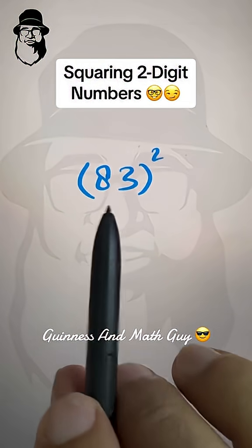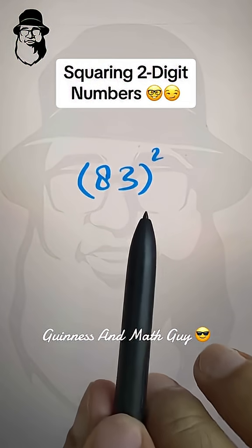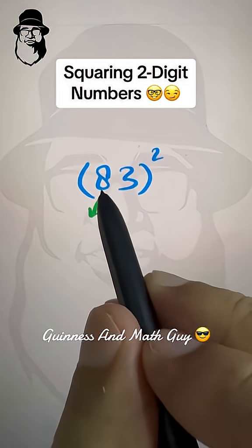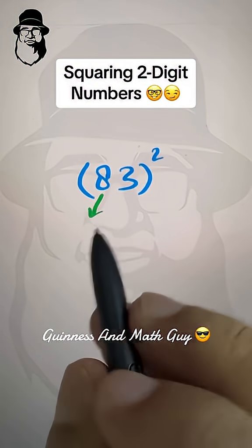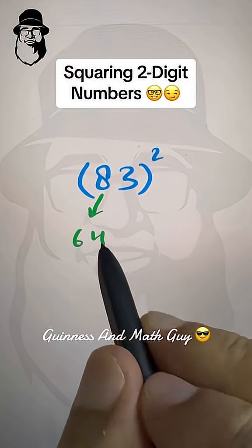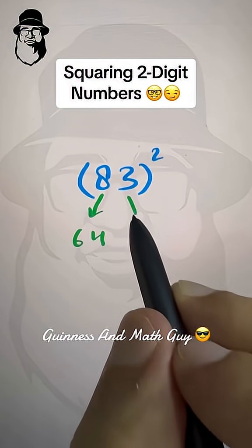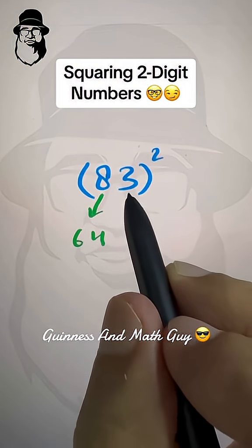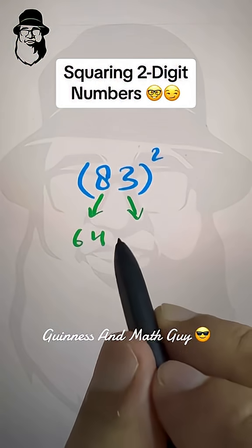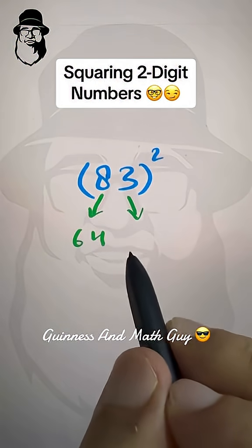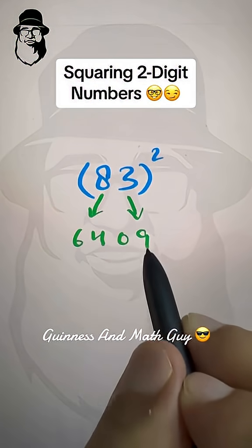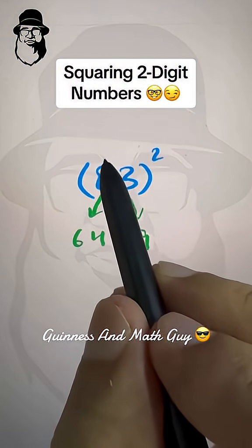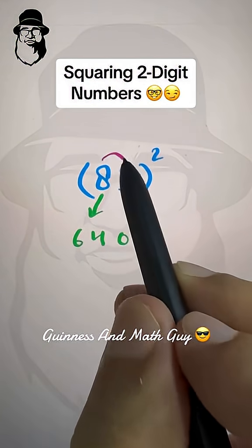With this method, you can square any two-digit number. First, square the right digit: 8 squared is 64. Then square the left digit: 3 squared is 9, but we have place for two digits, so we write 09. And then the last step is multiply these two digits here.